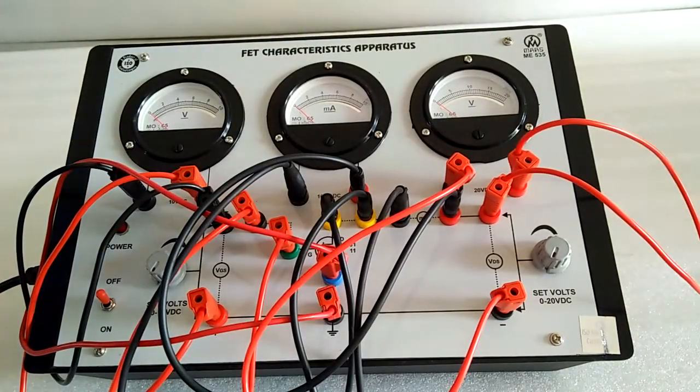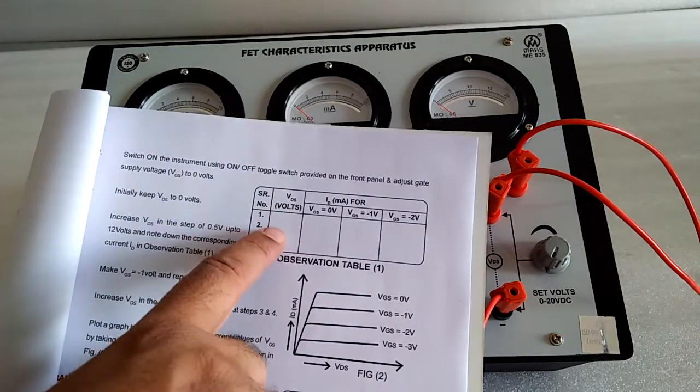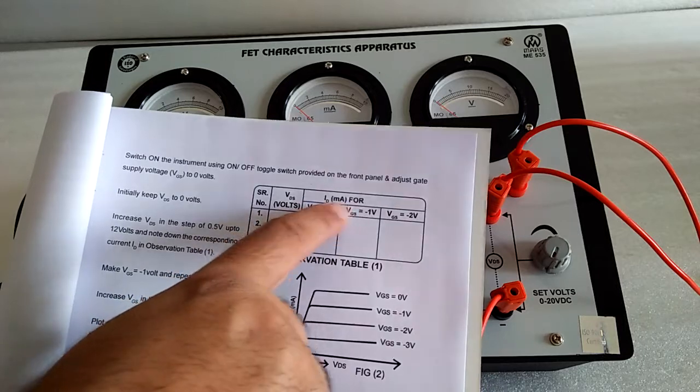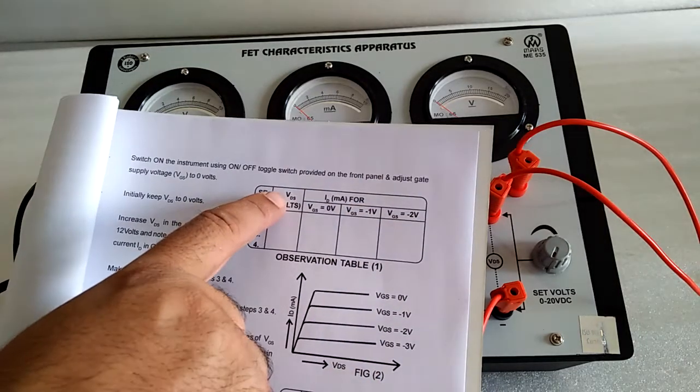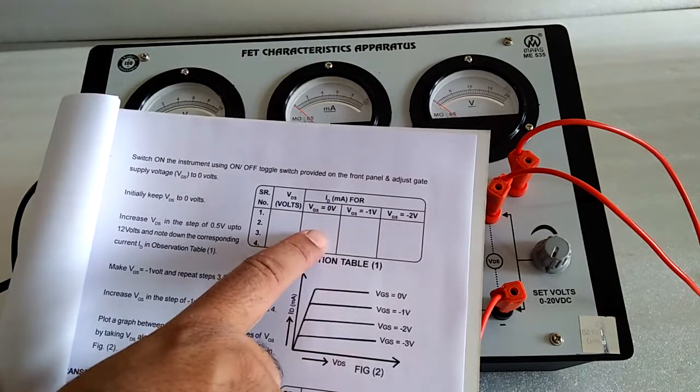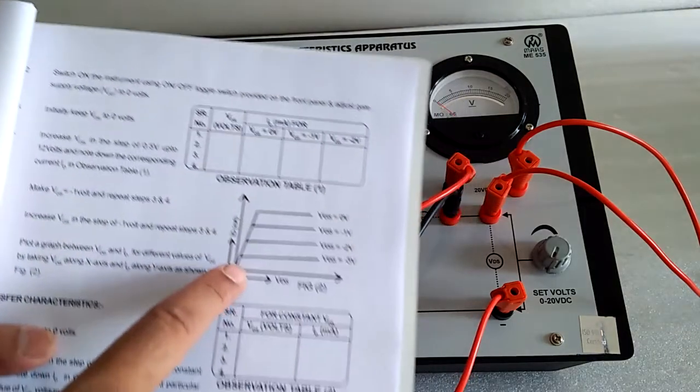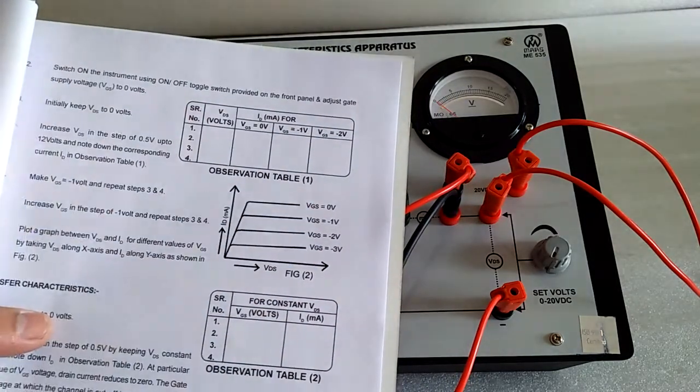And there is the table. You have to set the VGS at different voltages, increase the VDS and note down the ID. And make the graph between VDS and ID. That will be here for a constant VGS.